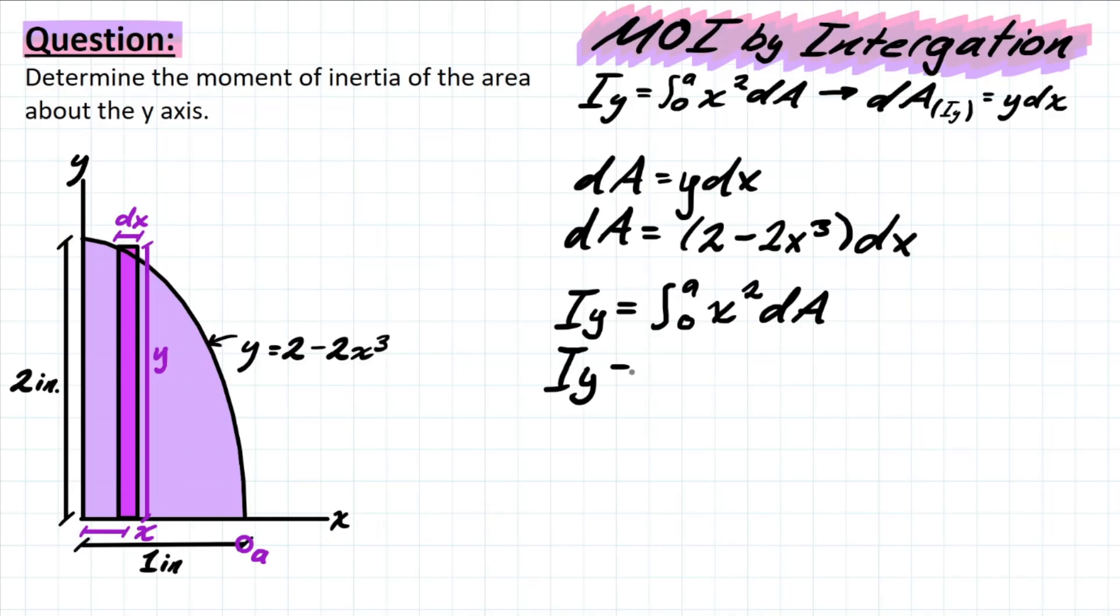We can now finally start plugging in. We have the integral from 0 to 1, which is, once again, that strip's travel path. We have x squared, and then dA, which is 2 minus 2x to the 3, dx. This all looks really good because we have all of our terms in terms of x with this dx at the end, meaning that we are totally fine to integrate and won't have a combination of x and y variables.